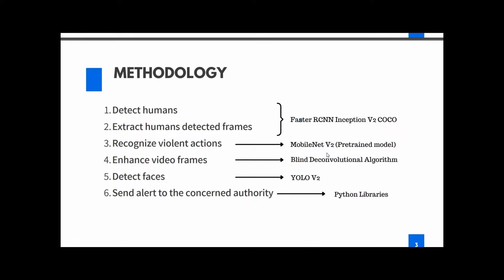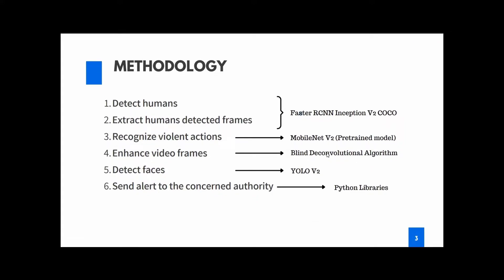Going to the methodologies we will be using to achieve those four modules successfully — the first methodology is detecting humans in a video frame and the extraction of human-detected frames from the videos. These two steps will be achieved by using the pre-trained model called the Faster RCNN Inception V2 COCO model, which delivers a decent accuracy. The next methodology is recognizing violent actions from each video frame extracted from the previous step.